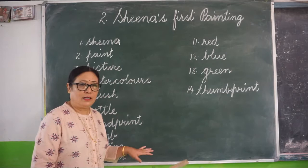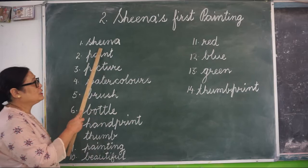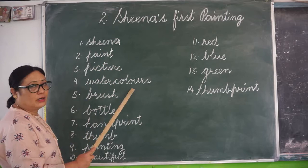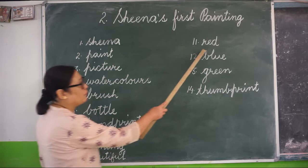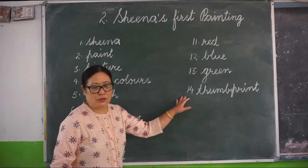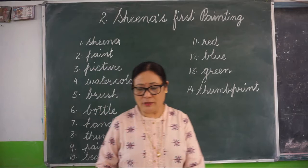First we will learn these difficult words, then we will learn about this chapter. Once again I am going to read these difficult words: Sheena, Paint, Picture, Water Colors, Brush, Hand Print, Thumb, Painting, Beautiful, Red, Blue, Green, Thumb Print. I have given 14 words. You need to copy and learn the spellings.